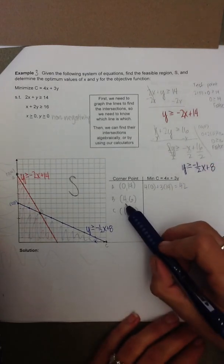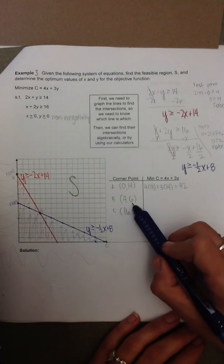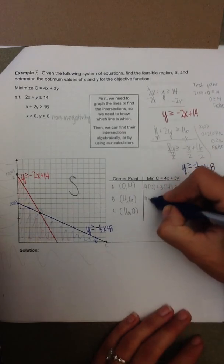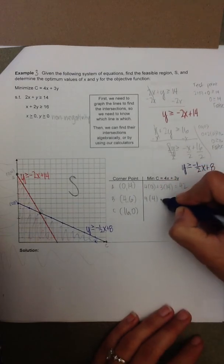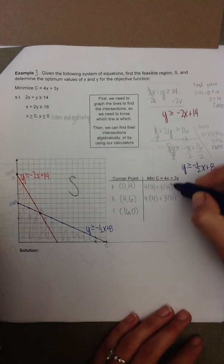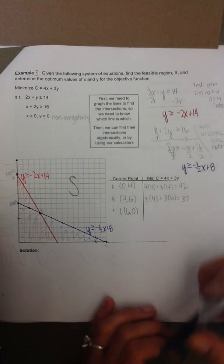And then the second point, we replace x with 4 and y with 6. So that's 4 times 4 plus 3 times 6. That's 16 plus 18 gives us 32. 34, excuse me.